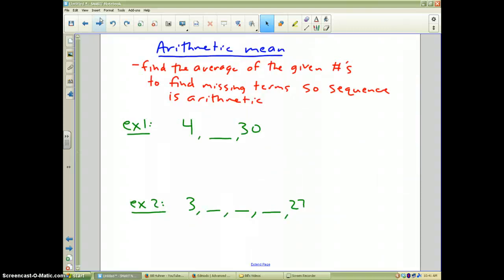Last, I'm going to talk about the arithmetic mean. As you notice in example 1 and example 2, I have some pattern in numbers, but my middle numbers are missing. The arithmetic mean helps us find those. Basically, what is it? You find the average of the given numbers to find the missing terms so that the sequence is arithmetic.